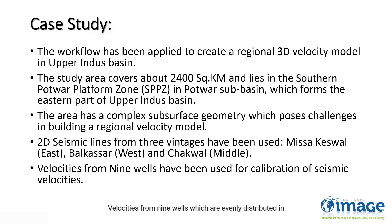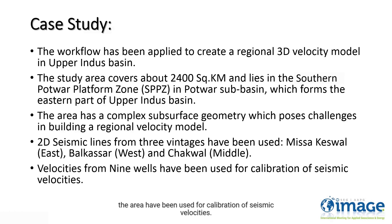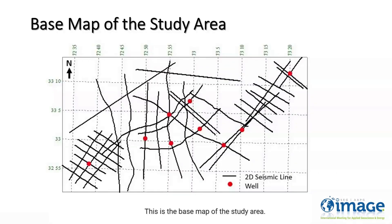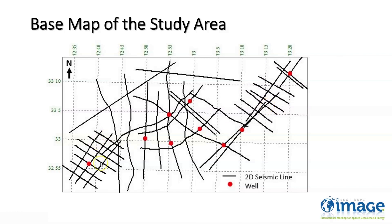Velocities from 9 wells, which are evenly distributed in the area, have been used for calibration of seismic velocities. This is the base map of the study area. These are the Misakaswal lines, these are the Balqasar lines, and these are the Chakwal lines.